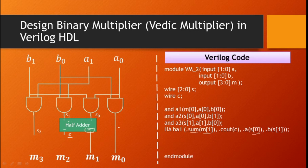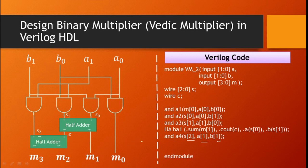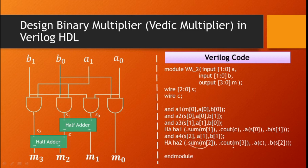Next is another AND gate for A1 into B1 with output S[2]: and A4 (S[2], A[1], B[1]). Then a second half adder instance HA2 adds S[2] and C: .sum connected to M[2], .Cout connected to M[3], .A connected to C, .B connected to S[2]. This completes the Verilog code for the 2-by-2 Vedic multiplier.